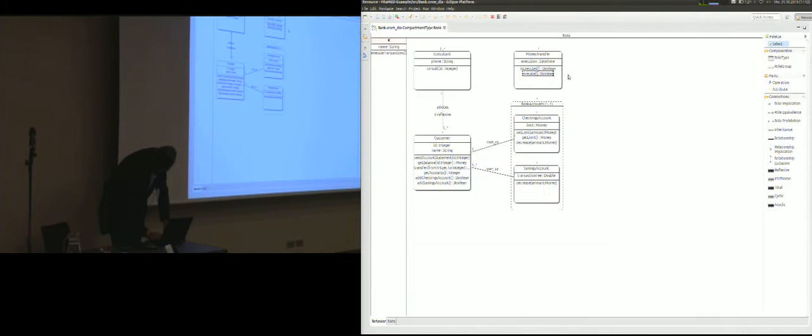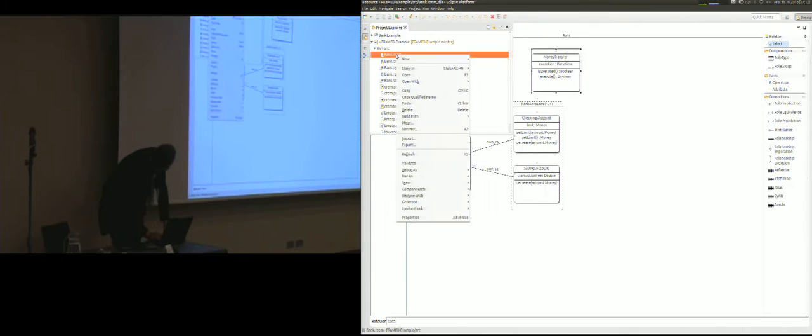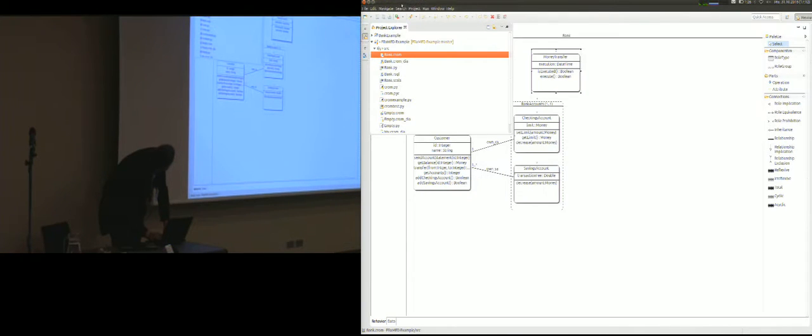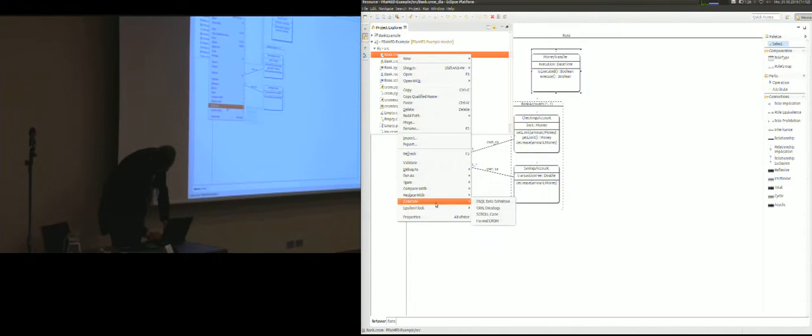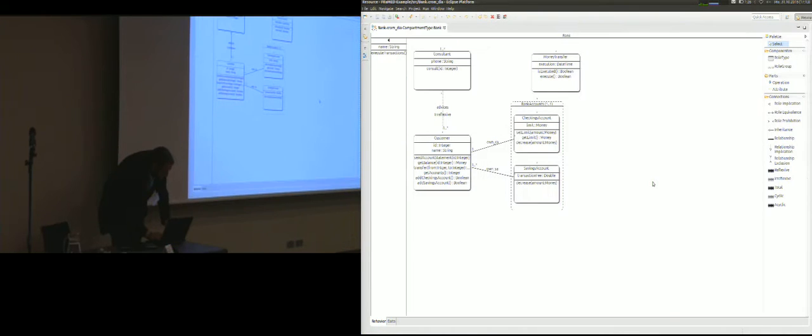Just for now, whenever we change something, the corresponding metamodel is generated here, indicated with the .crom file. And then we can hit generate. We either generate Scroll code—yeah, it was already there—and also can generate the formal CROM code.